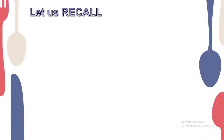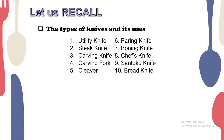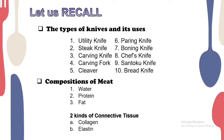Let us review our topic from last meeting. We talked about the types of knives and their uses — utility knife, steak knife, carving knife, carving fork, cleaver, paring knife, boning knife, chef's knife, santoku knife, and bread knife. We also talked about the compositions of meat: water, protein, and fat, and discussed two kinds of connective tissues — collagen and elastin.